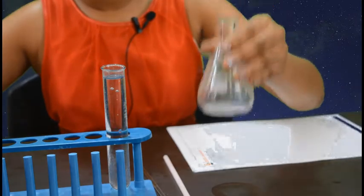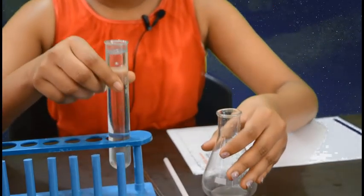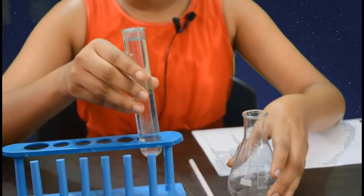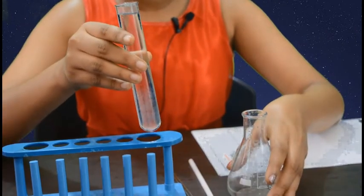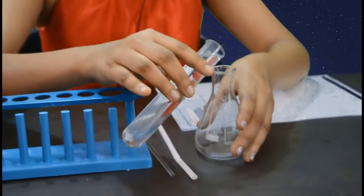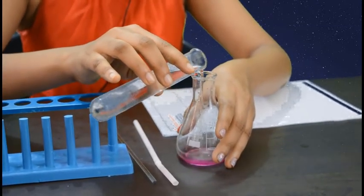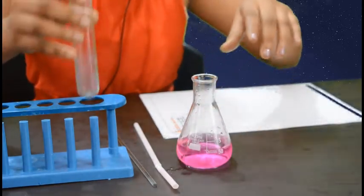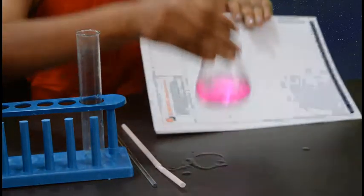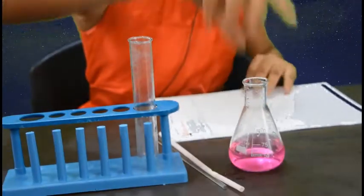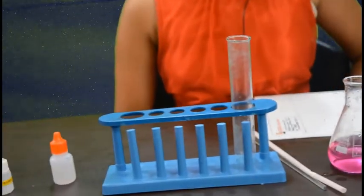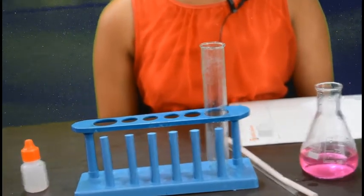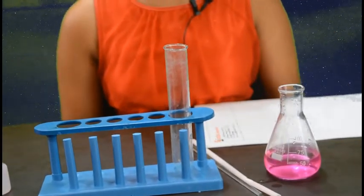This is basic in nature and this is phenophthalein solution. Now let's add phenophthalein solution into sodium carbonate. It turns pink in color. This is because the phenophthalein has been mixed with sodium carbonate, and it turns pink in color because sodium carbonate is basic in nature.